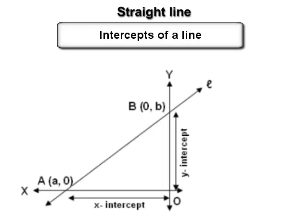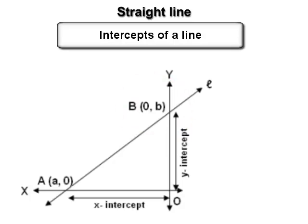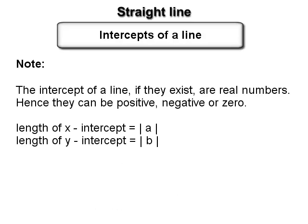Intercepts of a line: If a line L intersects the x-axis at point A with coordinates (a, 0), then a is called the x-intercept of the line. Similarly, if the line L intersects the y-axis at point B with coordinates (0, b), then b is called the y-intercept of the line. Note that intercepts can be positive, negative, or zero. The length of the x-intercept is |a| and the length of the y-intercept is |b|.